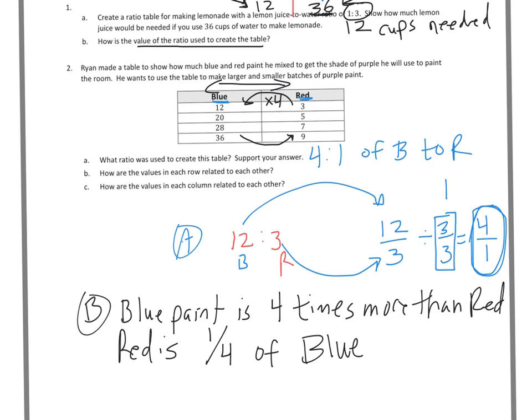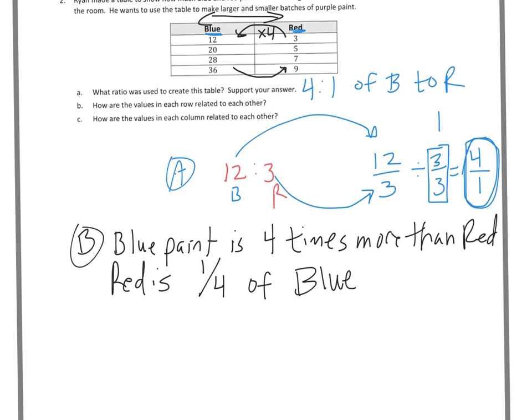Our last one says, C. How are the values in each column related to each other? This one, we're looking column-wise, so we're looking vertically. So 12 to 20, 20 to 28, 28 to 36. Over on the other side, 3 to 5 is 2, 5 to 7 is 2, 7 to 9 is 2. So I'm going to make my statement.